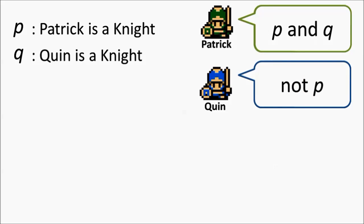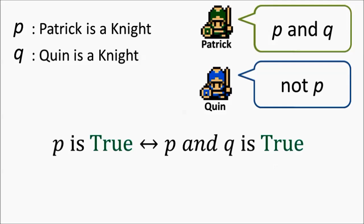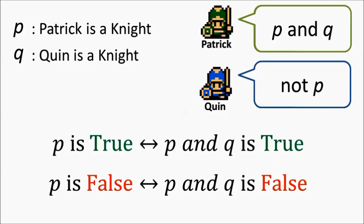The key here is to notice that the Boolean value for an Islander's identity must be identical to the Boolean value for any statements the Islander makes. For example, if P is true and Patrick is a Knight, then whatever Patrick says must be true as well. On the other hand, if P is false, Patrick is a Knave, and whatever Patrick says must be false.